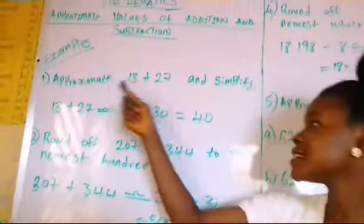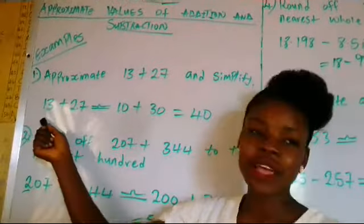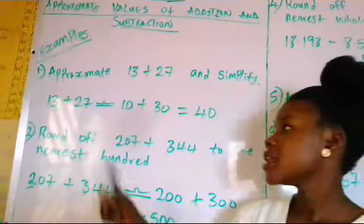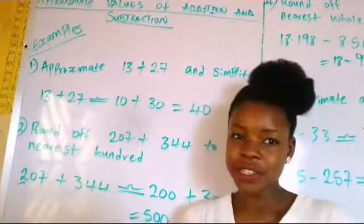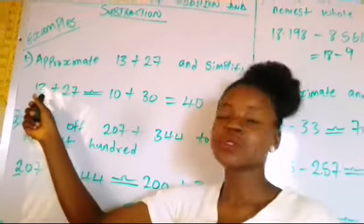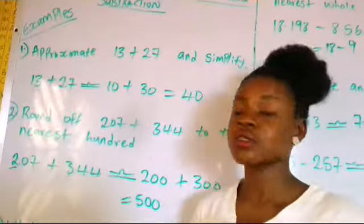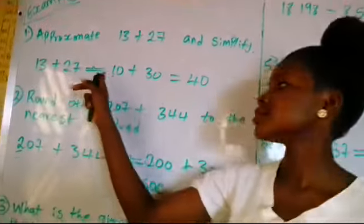So we have an example here. Approximate 13 plus 27 and simplify. We'll approximate 13 and 27 before adding them. To learn more about approximation, you can visit our previous lesson. To approximate 13, since 3 is not up to 5, I'm going to round it down to 0, leaving us with 10.